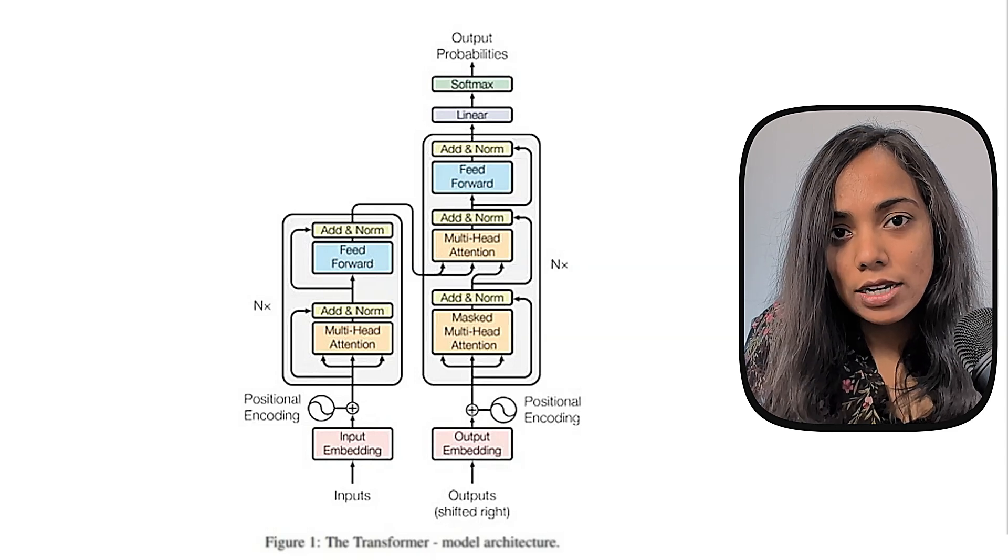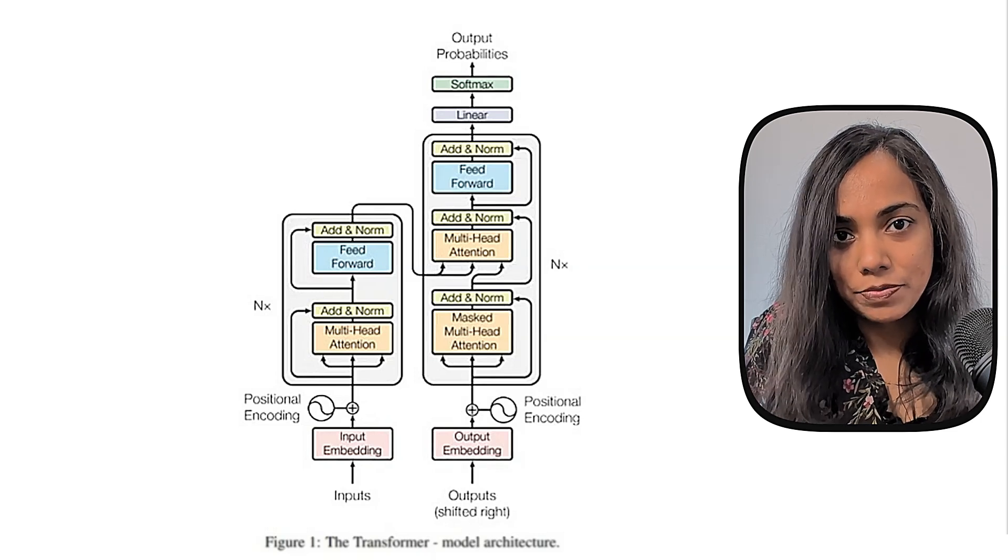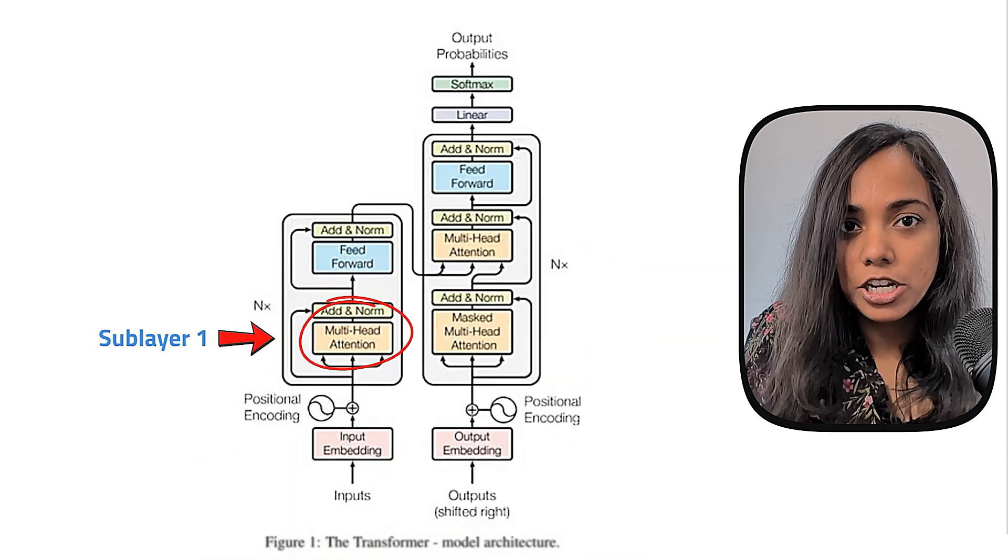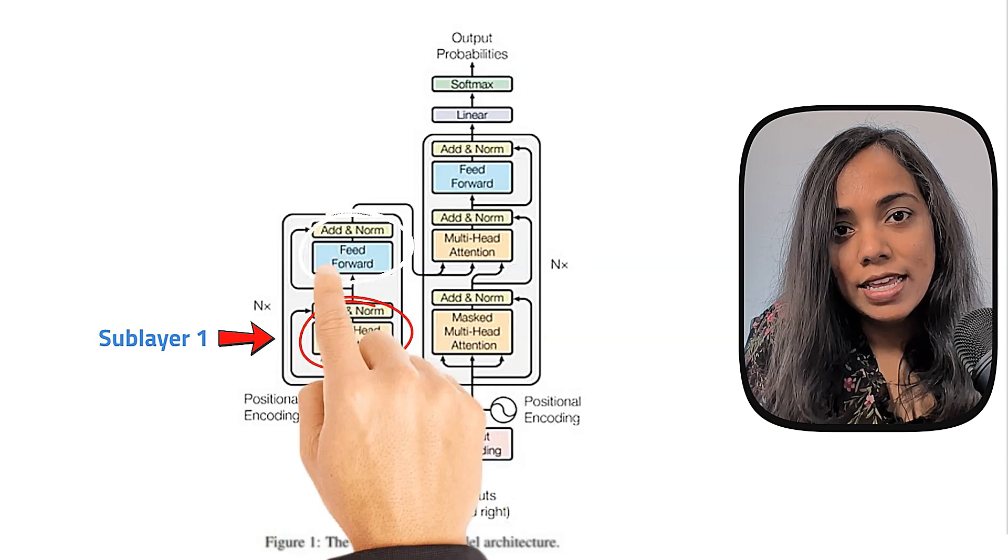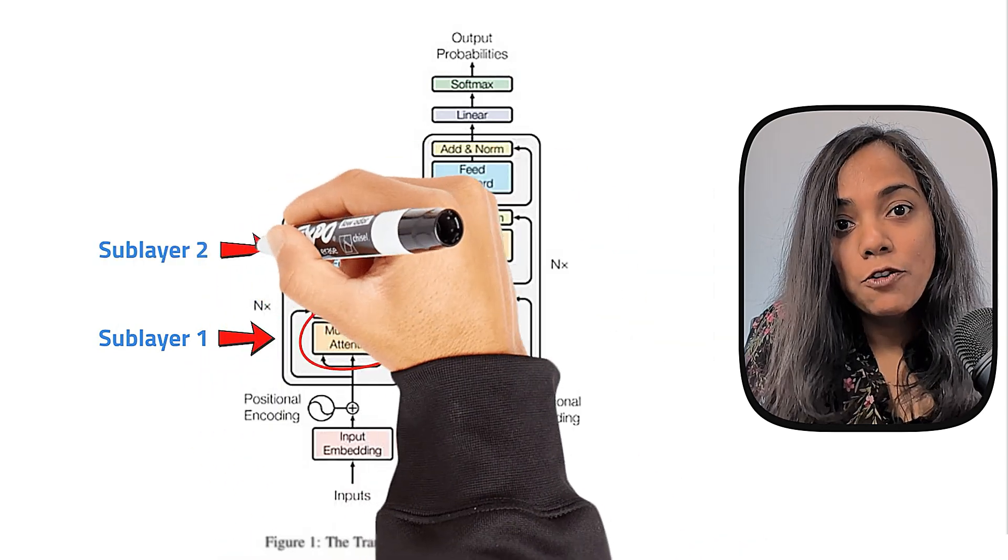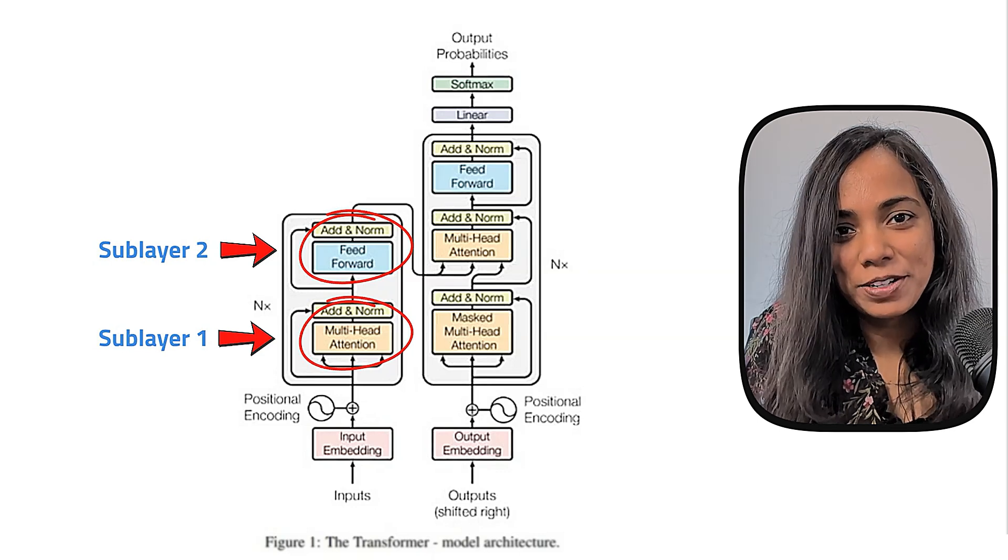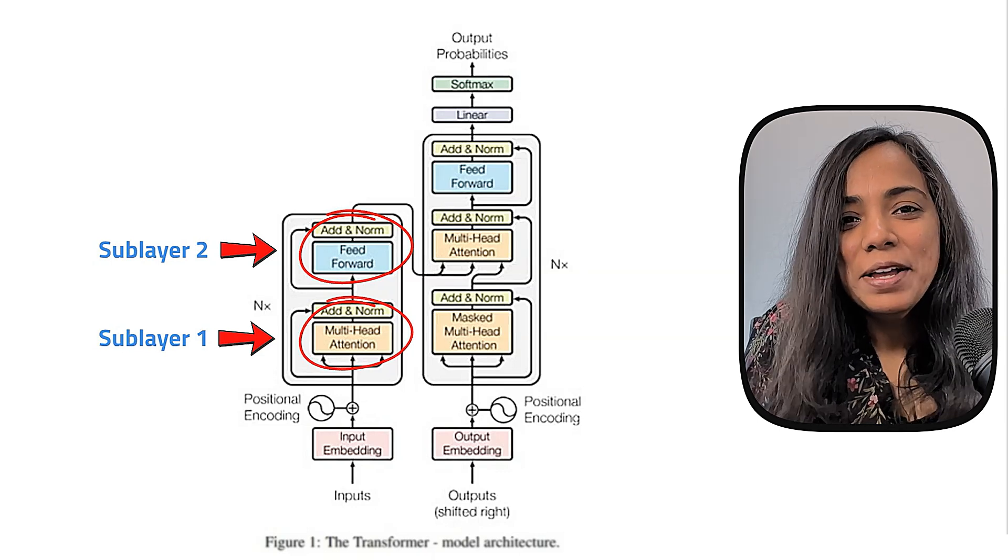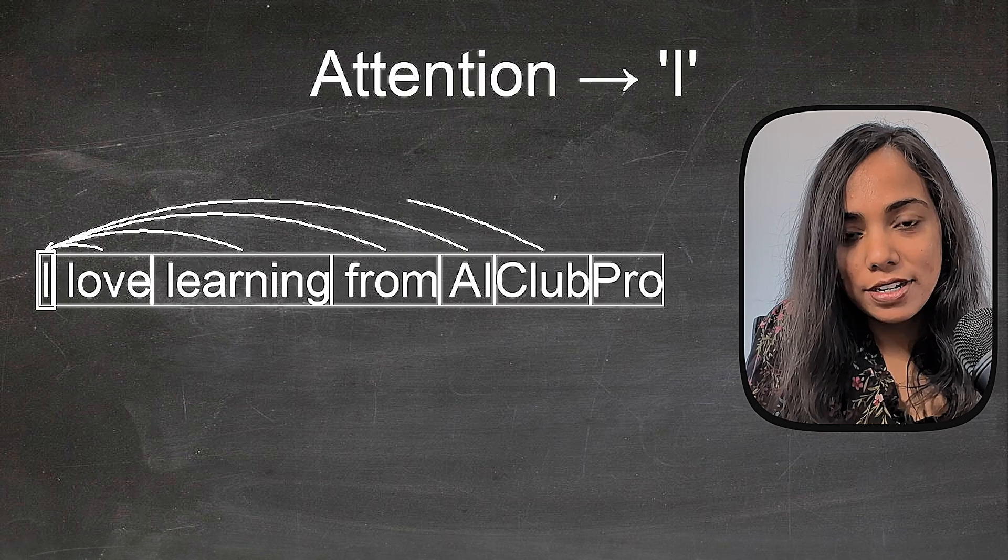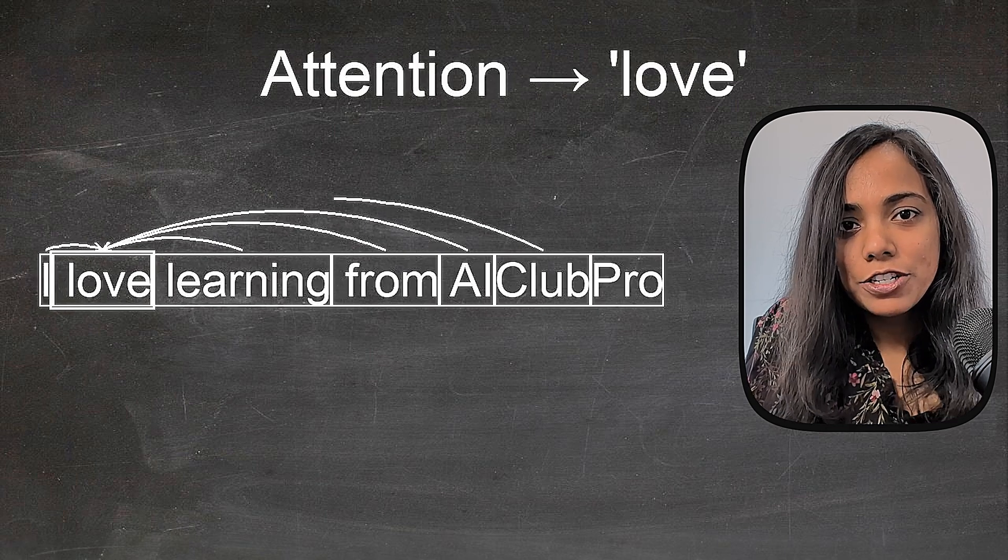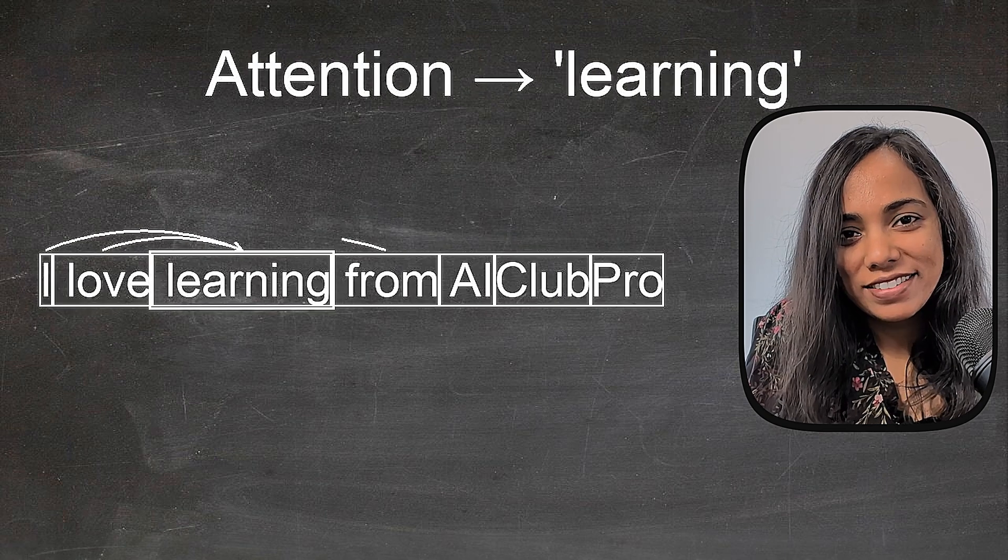Encoder block consists of two main parts or sublayers. The first one is the multi-head self-attention and the second one is a position-wise fully connected feed-forward neural network. That's a mouthful.